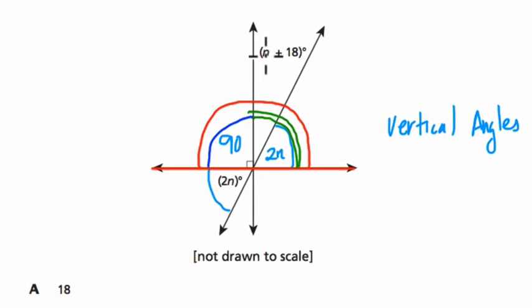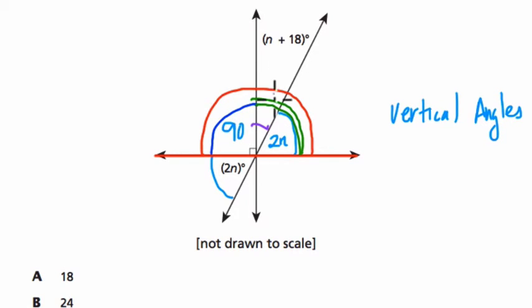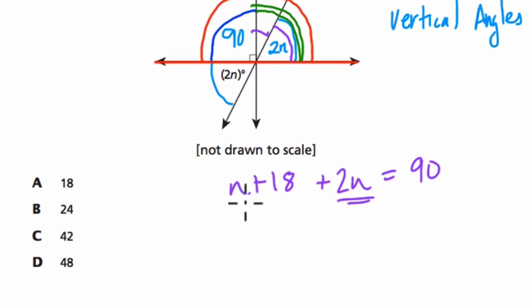Because this angle here is n plus 18, and this angle is 2n, and if I add them together, it's got to equal 90 degrees. 2n plus n is 3n, 3n plus 18 is 90.